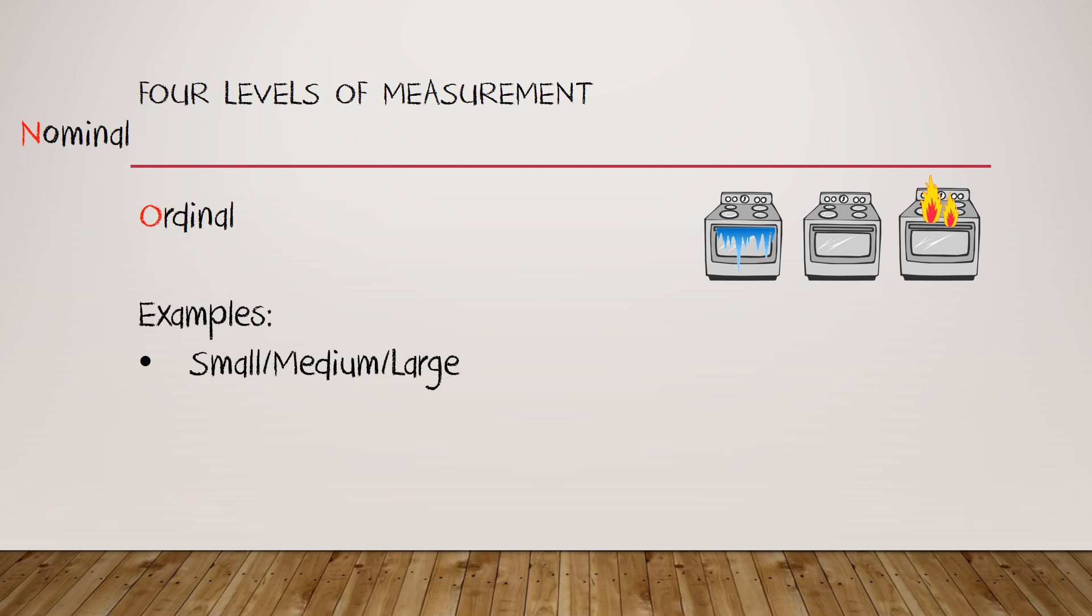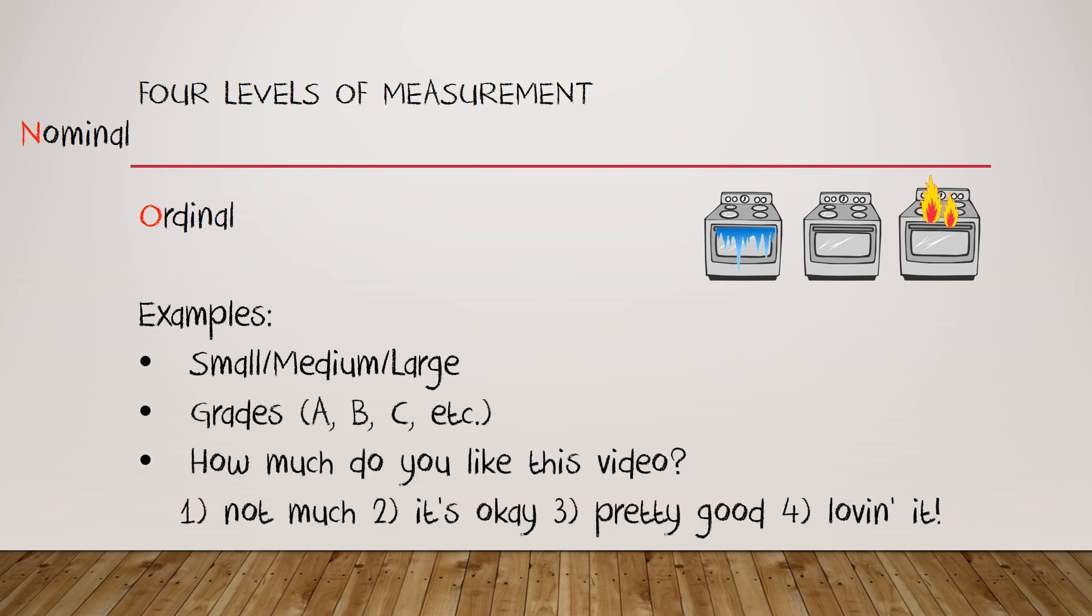Let's look at some examples: small, medium, and large, of course. Grades - A, B, C, and so on. And even something like this: how much do you like this video with answers from 1 to 4 indicating your degree of appreciation? The last one again is going to be numeric data, but it's only at the ordinal level because you can't do any arithmetic here. You can't say that because 2 minus 1 is the same as 4 minus 3, that means the gap between not much and it's okay is the same as the gap between pretty good and loving it. Maybe it is, maybe it isn't. You don't know, and that means that we're at the ordinal level of measurement.